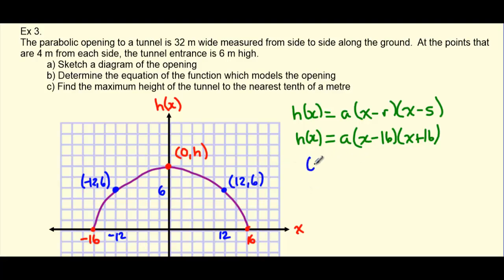So we're going to put the 6 in where h goes, and we're going to put the 12 in where x goes. So let's draw that here. 6 equals a times our brackets, negative 16, positive 16, and our values of 12 here for x. And let's work this out. So we get 6 equals a times (12 minus 16 is negative 4)(12 plus 16 is 28).